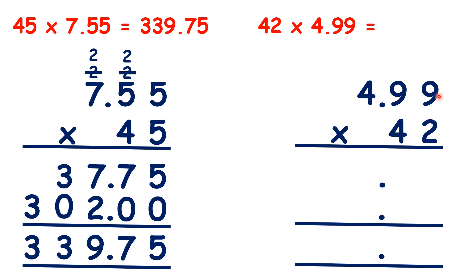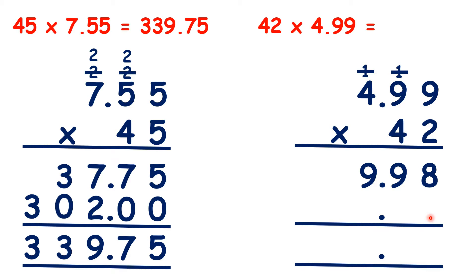So now we can just multiply as we normally would if we were doing 499 times 42. To start with, although what we're really doing is multiplying 900ths by 2, because we've put our decimal points in, we can just start with 9 times 2, so that's 18. 9 times 2 is 18 plus 1 is 19. And 4 times 2 is 8 plus 1 is 9. Now we cross out our working. And 9 times 4 is 36 plus 3 is 39. And 4 times 4 is 16 plus 3 is 19.